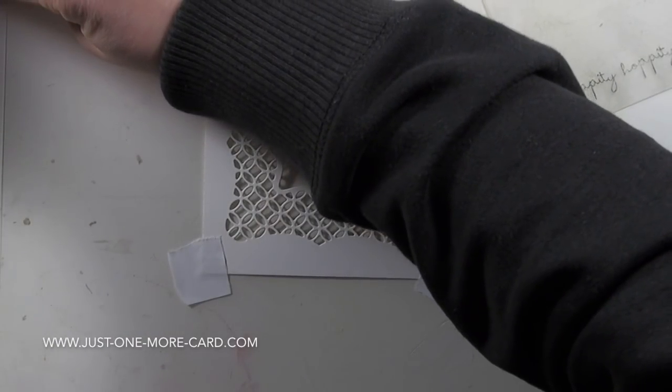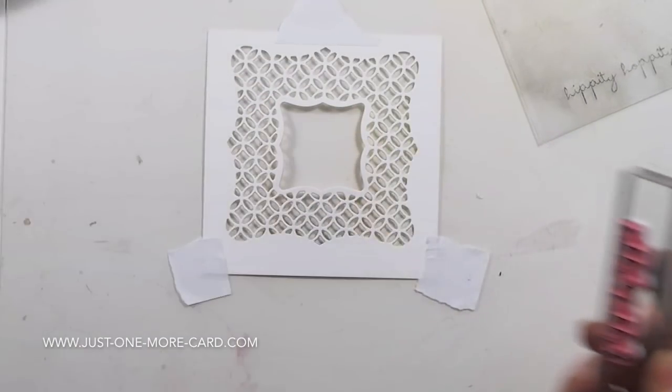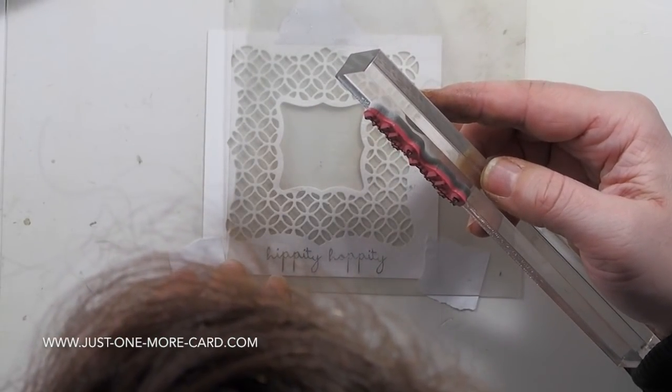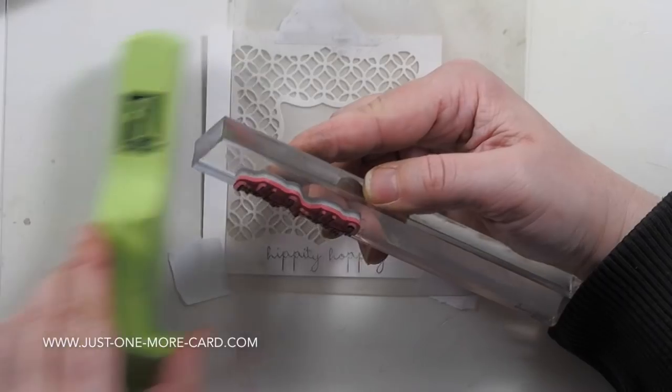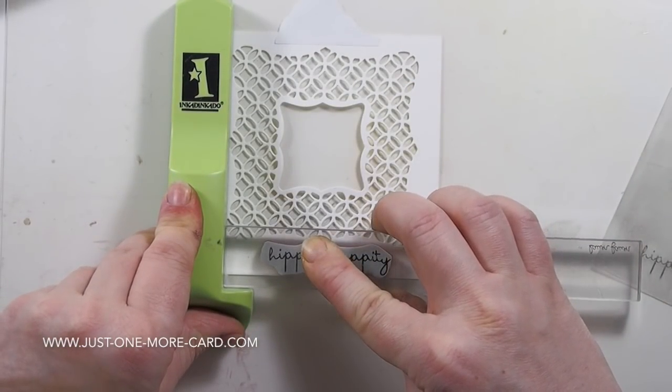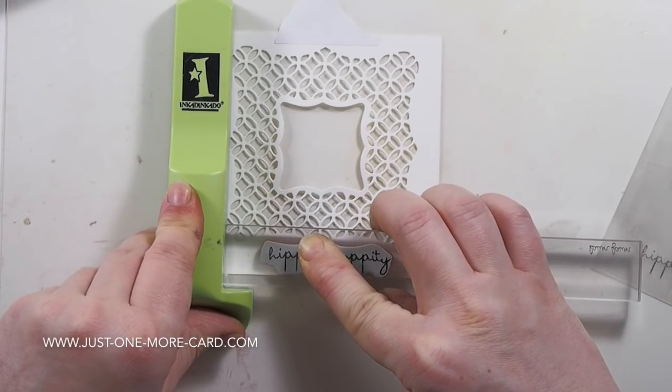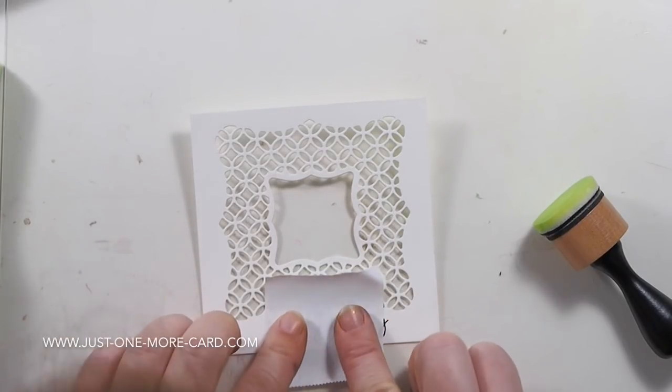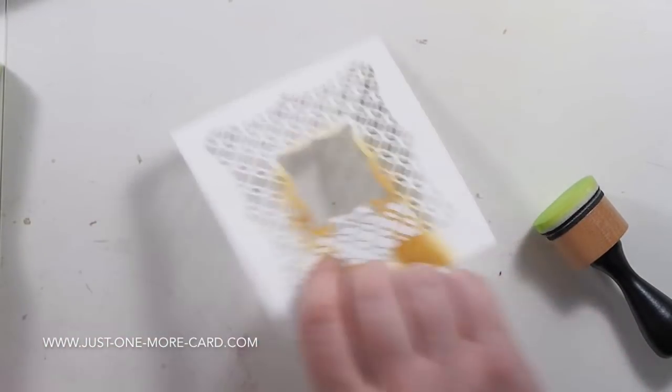So here's what's going to happen: I'm inking up my stamp again. I haven't removed the stamp from the acrylic block—it's still in the very same spot. Now I'm using this plastic piece to make sure that my stamp goes exactly where it needs to go, sliding this T-shape back in, sliding the acrylic block back in, and now I'm stamping exactly where it needs to go. There we go.